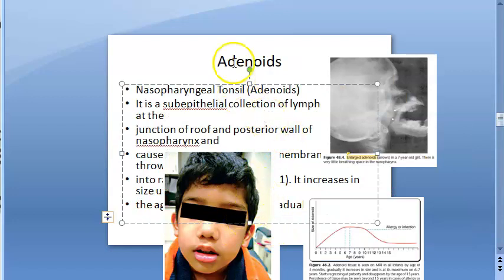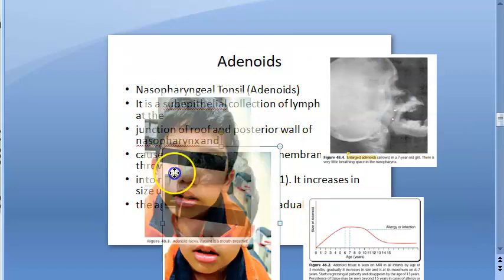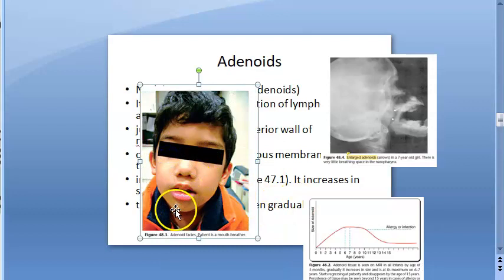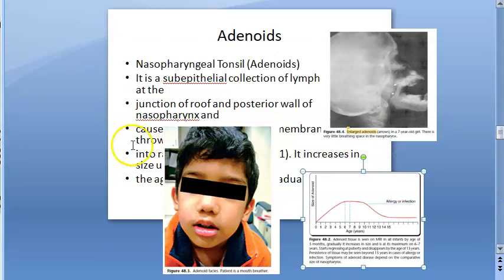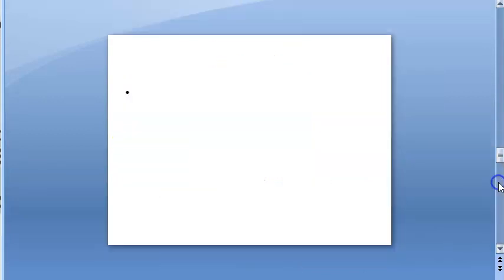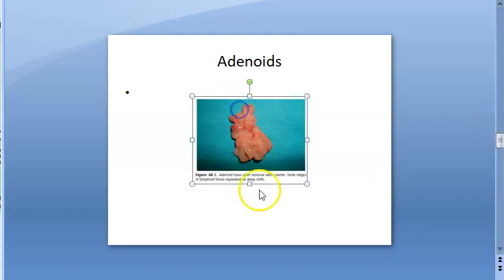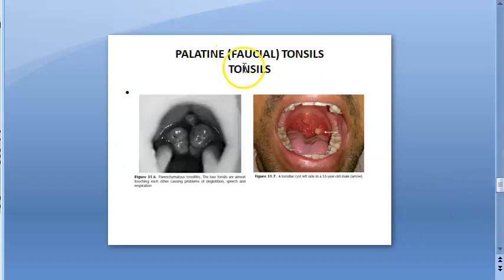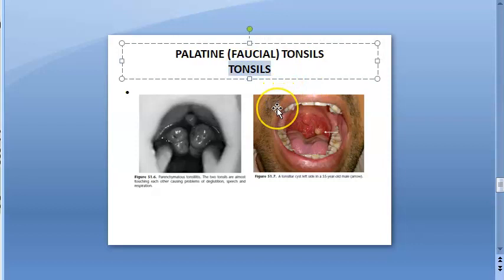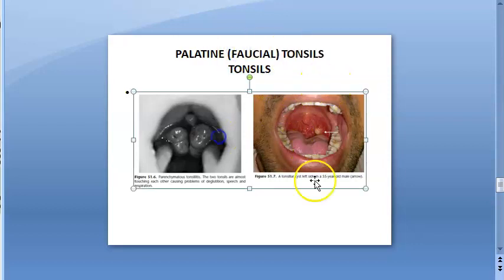Each component is explained in detail. The adenoids can cause an 'adenoid face' if they increase in size; they're supposed to regress after seven years of age, but if they don't they can cause obstruction. Adenoidectomy is the removal of the adenoids. The tubal tonsils are also briefly explained. When someone says simply 'tonsils,' they are referring to the palatine tonsils, also called the faucial tonsils.